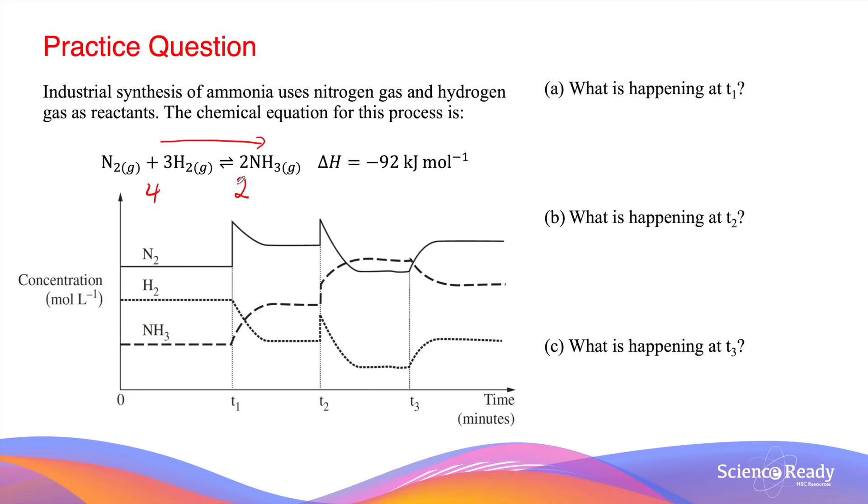By shifting the equilibrium position to the right side that has less gases, the total pressure in the system is reduced, which is the opposite to the increase in pressure that we previously discussed at T2.